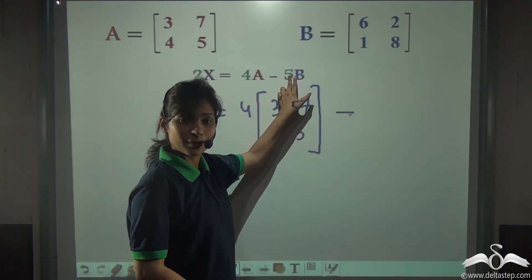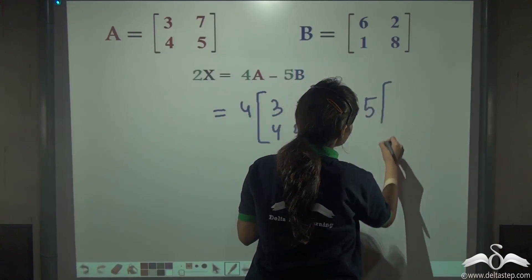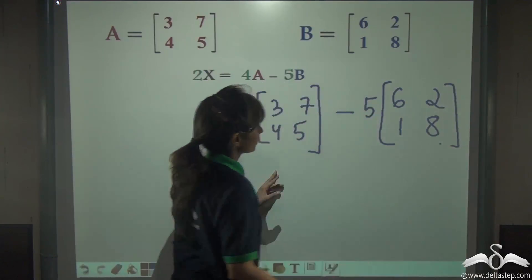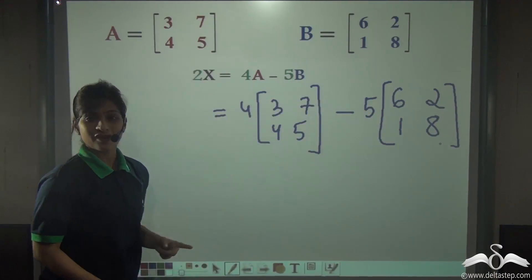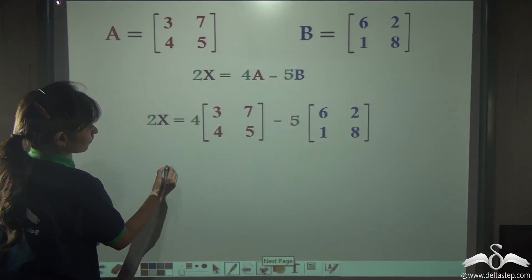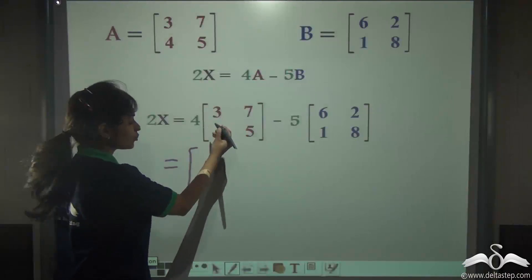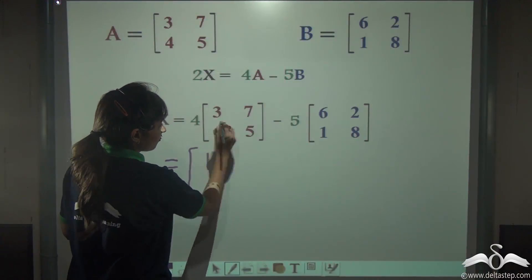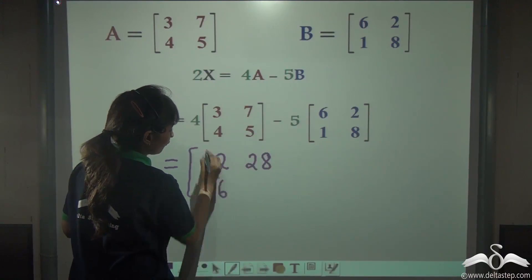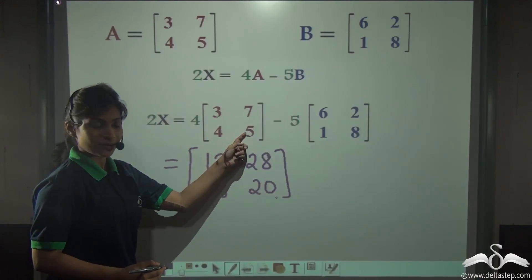4A means 4, a number, into the matrix A. We have just now learnt how to multiply a number with a given matrix. So 4 into this matrix that is [3, 7, 4, 5] minus 5B. 5 into [6, 2, 1, 8]. Simply find out 4A minus 5B. We have multiplied 4 with all the entries inside this matrix.